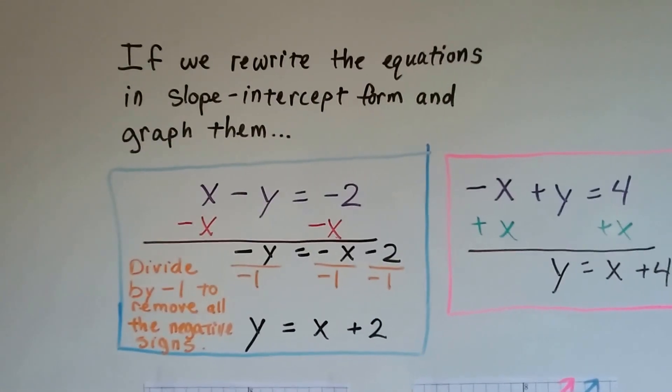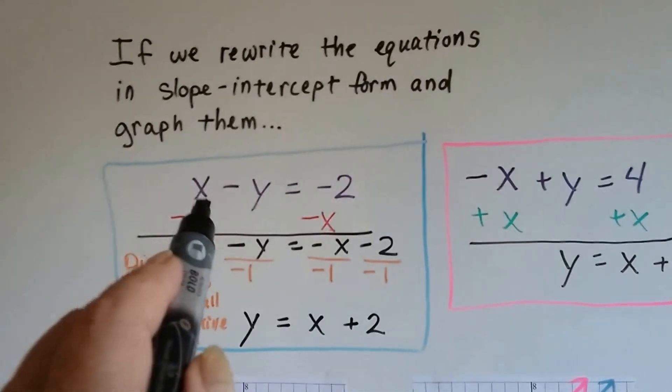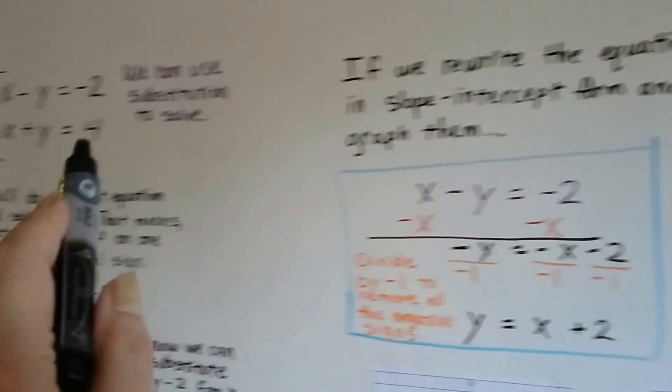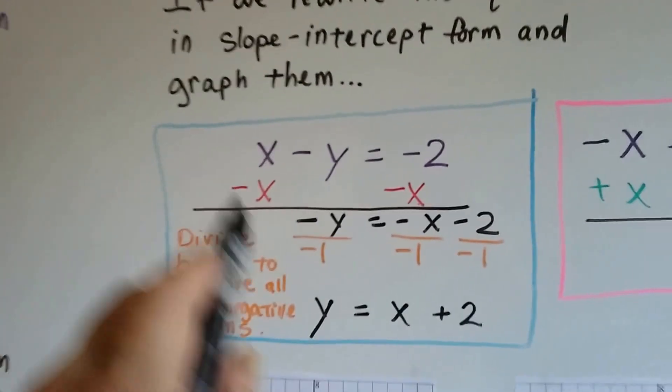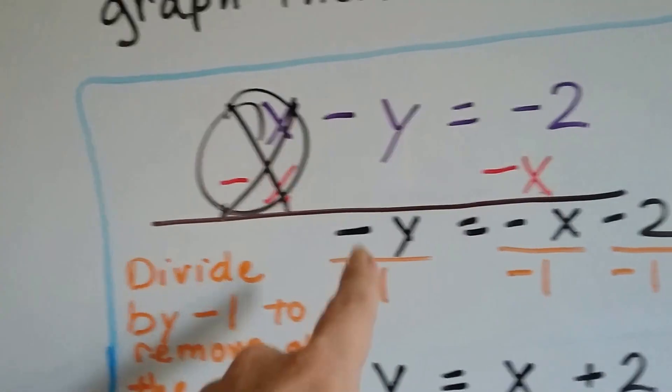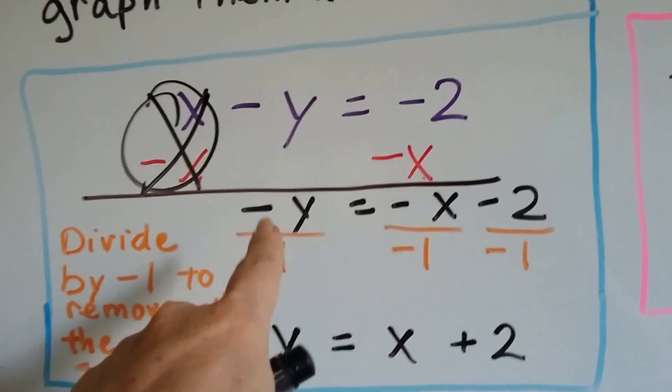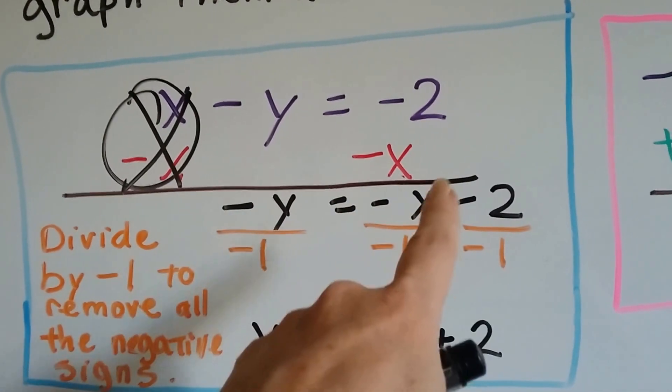So what we're going to do is we're going to try graphing them. So we write them in slope-intercept form to graph them. We've got x minus y equals negative 2. We're going to subtract x from each side, and that's going to get rid of this x and put the y in front, so it's in slope-intercept form. So now we've got negative y equals negative x minus 2.